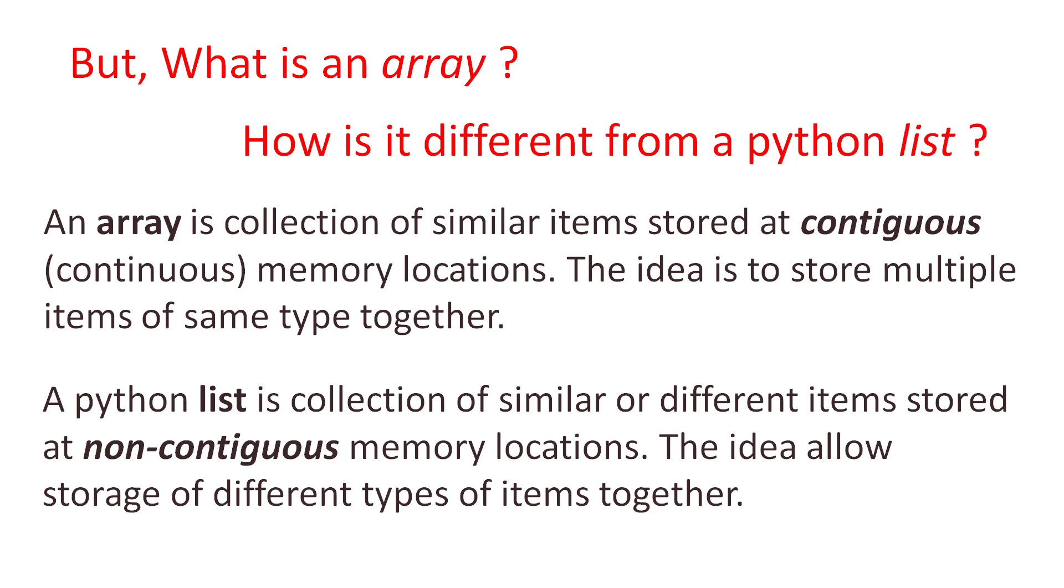Whereas, a Python list is a collection of similar or different types of items stored at non-contiguous memory locations. Here, the idea is to allow storage of different types of items together.